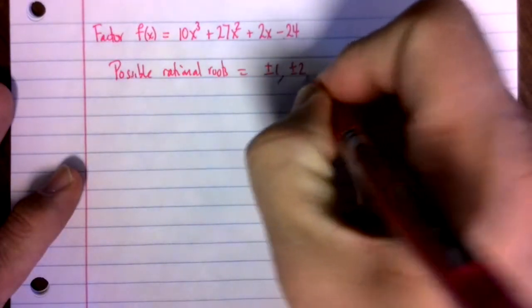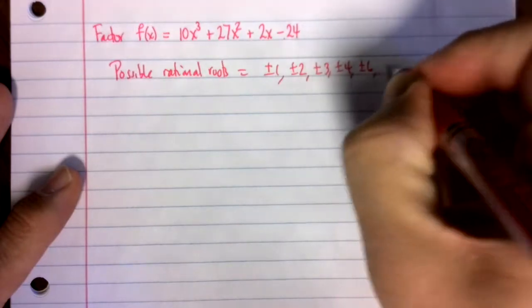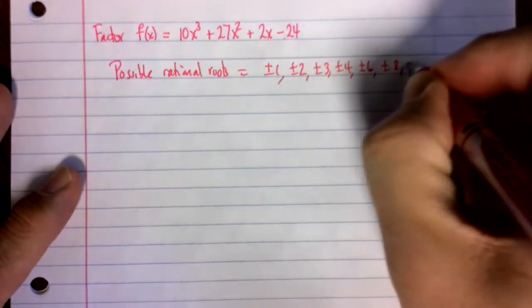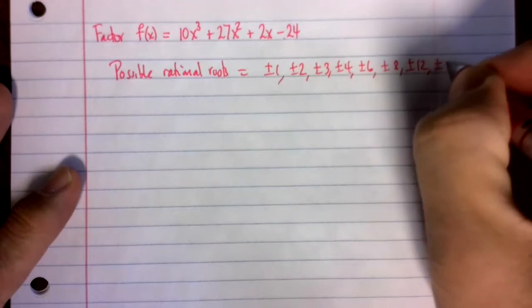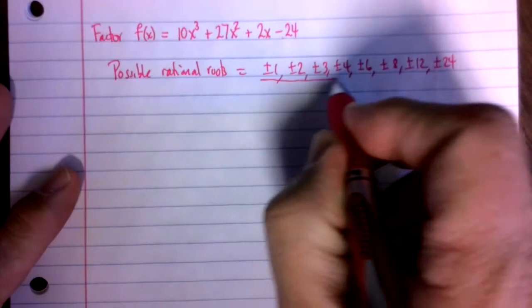So plus or minus 1, plus or minus 2, plus or minus 3, plus or minus 4, plus or minus 6, plus or minus 8, plus or minus 12, and plus or minus 24. Those are all of the factors of 24, both positive and negative.